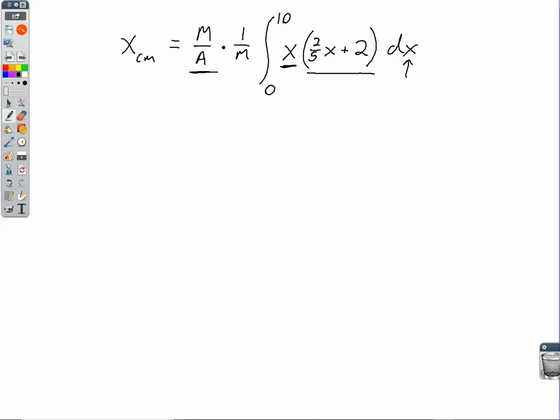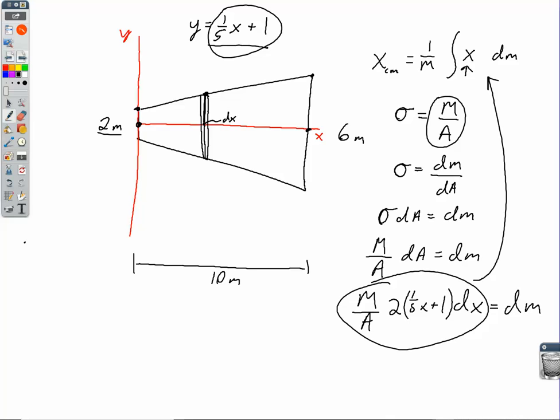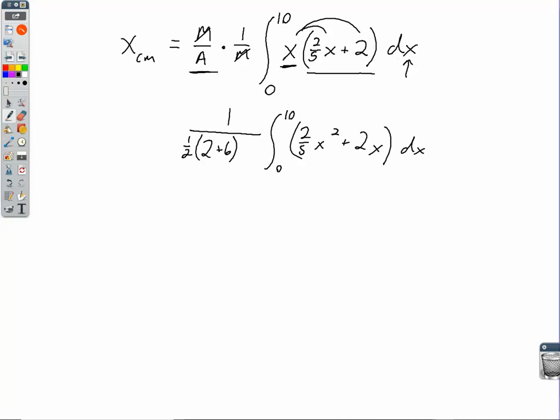So using the power rule here, we need to distribute the x into the linear function inside. So we end up with the integral from 0 to 10 of 2 fifths x squared plus 2 x. And we're integrating with respect to dx. Notice out in front, we have an M on top and an M on bottom. So the total mass cancels out. And then we're going to need 1 over the total area of that trapezoid. Let's use 1 half of base 1, which was 2, plus base 2, which was 6. So 2 plus 6 times the height of the trapezoid, which is 10.